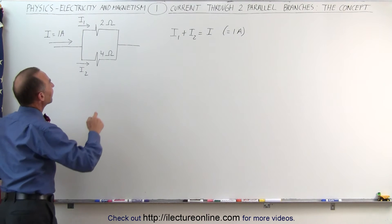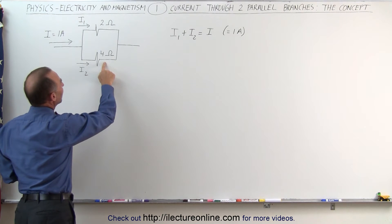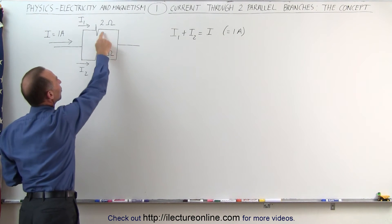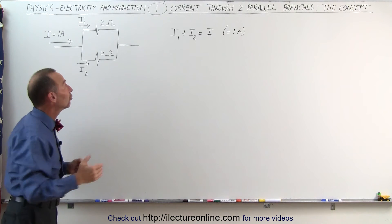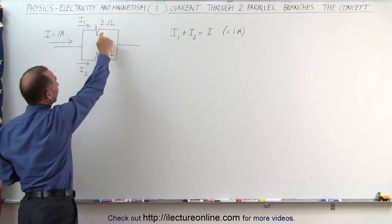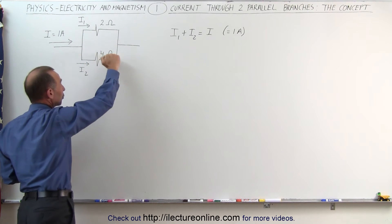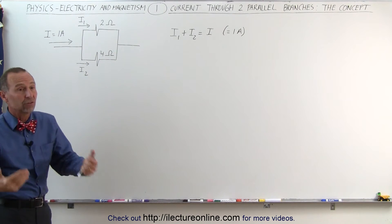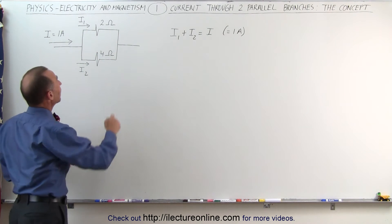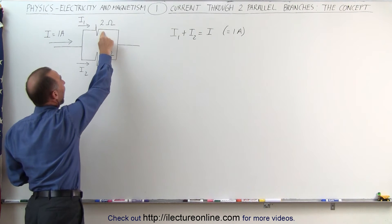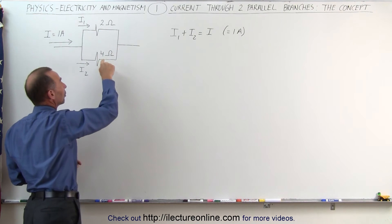Also notice that the resistance in the bottom branch is twice the resistance in the top branch. That means more current will flow to the top branch because the resistance is less, and less current will flow to the bottom branch because the resistance is more. And if the resistance is half in the top branch compared to the bottom branch, then the current to the top branch will be double.